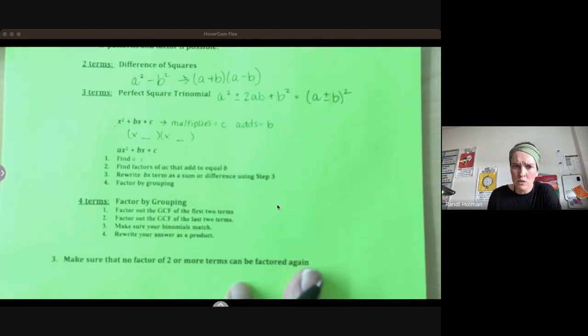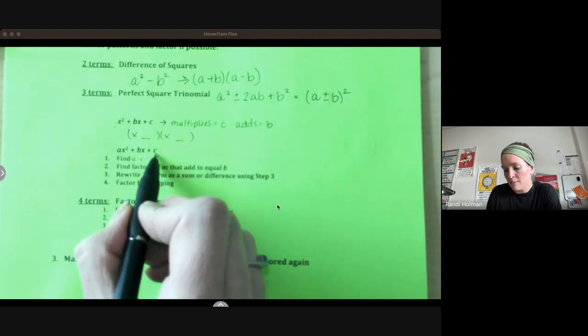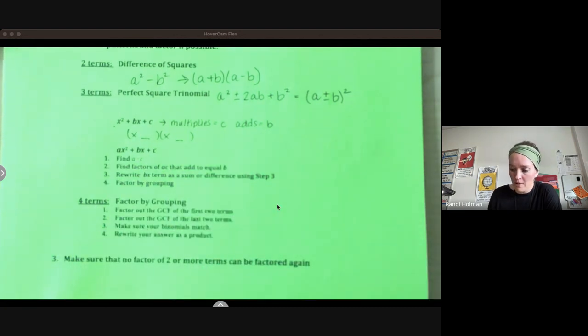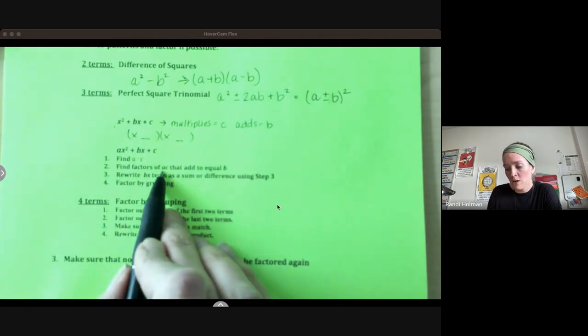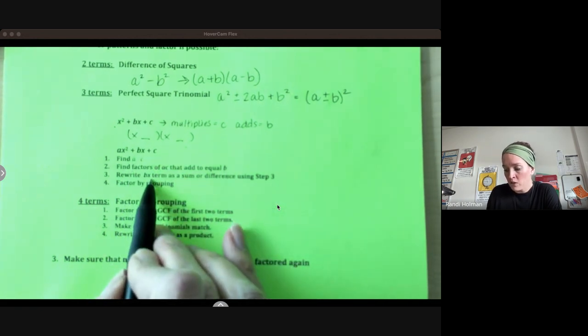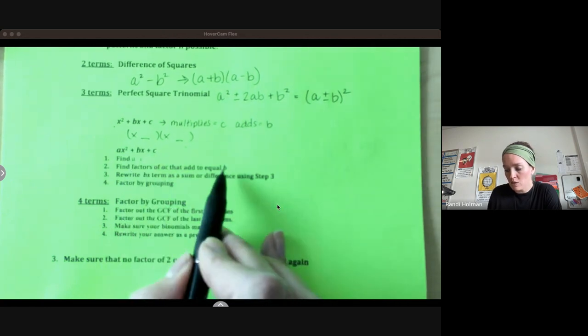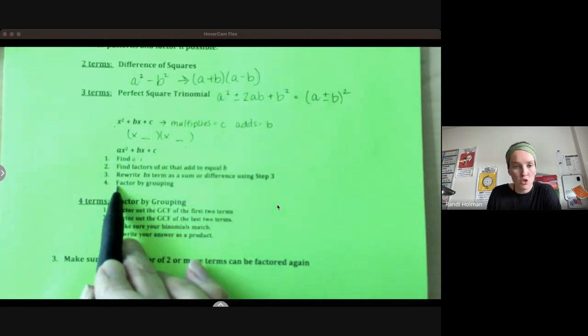Then finally with our trinomials, if your a value is not one, we're going to use what's called the ACB method. So you're going to multiply a times c to get all your factors into one number. Then find a factor of that value that adds to be your middle term. Rewrite that middle term as the sum or difference using step three. So rewrite this using your factors there. And then use your grouping.